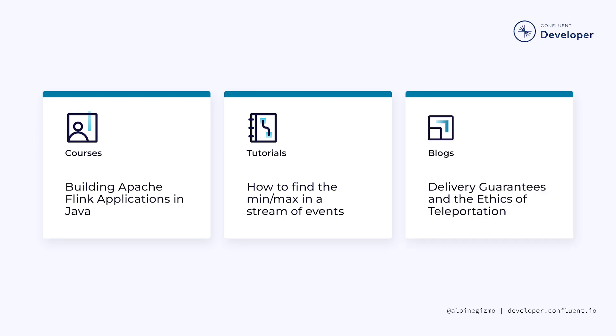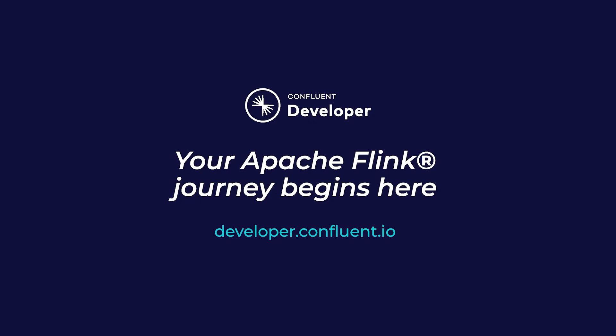The Confluent blog also has excellent content on a wide range of topics related to stream processing, such as this blog post that takes a light-hearted approach to explaining the differences between at least once, at most once, and exactly once guarantees. That wraps up this course on Apache Flink. Thank you for your interest. If you aren't already on Confluent Developer, head there now using the link in the video description to access other courses, hands-on exercises, and many other resources for continuing your learning journey.